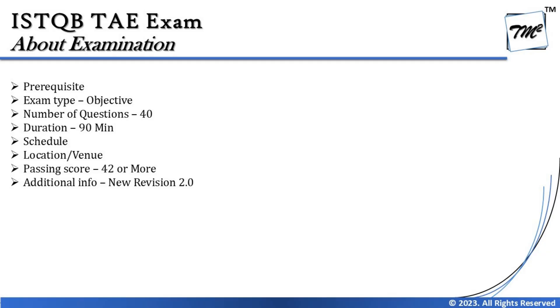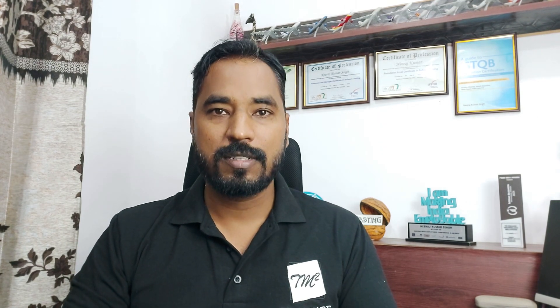Coming to the most important thing about this examination — the passing criteria — which is 42 or more out of 64 marks, that is 65%. 65% is a common criteria of success in ISTQB examinations, but the scoring systems differ, so you must know the minimum cutoff. 65% of 64 marks is 42, so you need to get at least 42 marks to pass this examination.